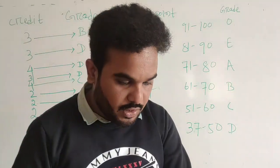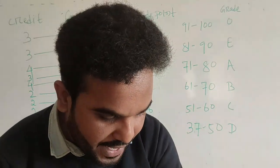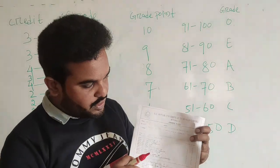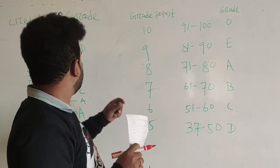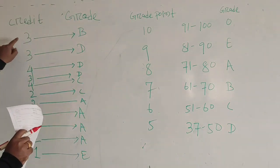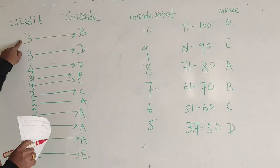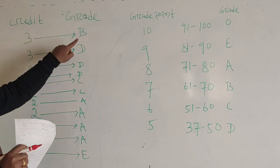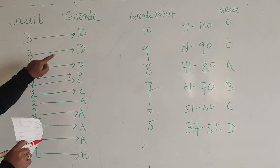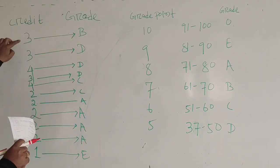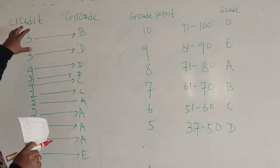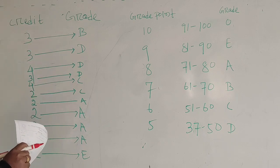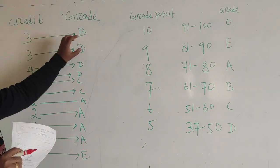You can see here. I have a particular message. The credit point and grade point that I have written here — this is for subject 1, credit 3, grade is B. Credit 3, grade is HGP. Subjects 1 through 11 — that is both for theory and practical.